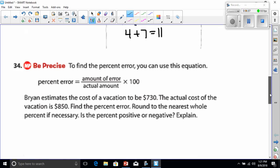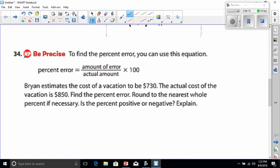I have to apologize, I did not see that there was one more to be worked here, and that's number 34. To find the percent error you can use this equation: percent error equals the amount of error over the actual amount times 100. So the amount of error divided by the actual amount. It says Bryan estimates the cost of a vacation to be $730. The actual cost of the vacation is $850. Find the percent of error.